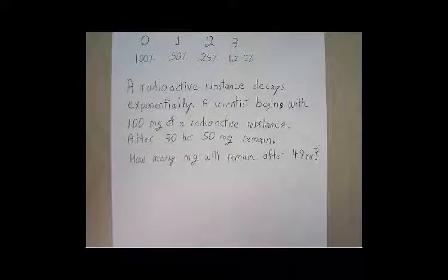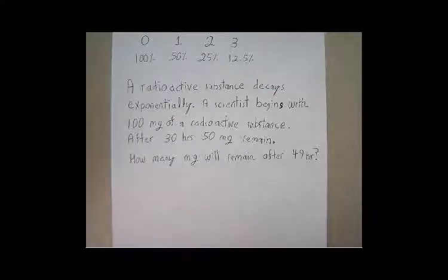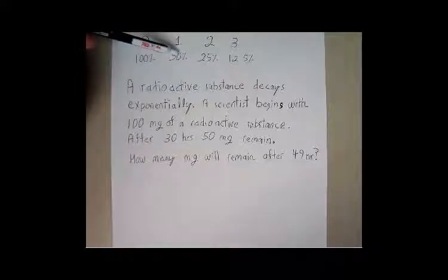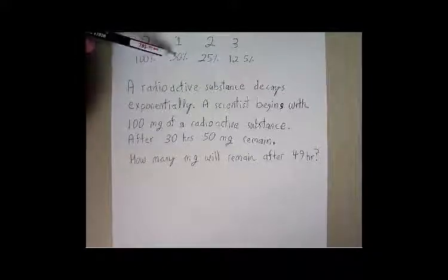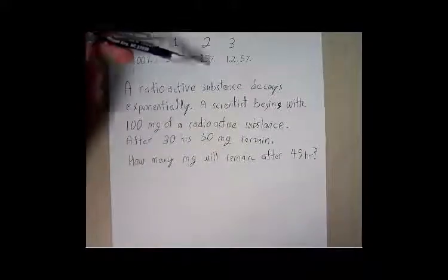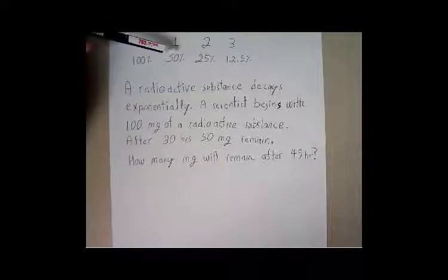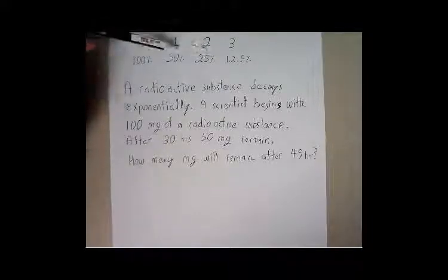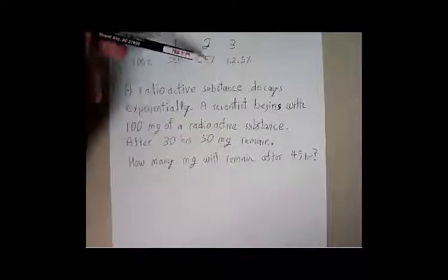But there would still be a small percentage remaining — it would never actually reach zero. A common fallacy is that people would say if you take half of the original twice, you would now have zero. But half-life means it's going to be half the previous amount.